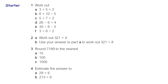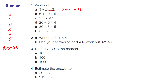Let's go through the starter together. Question one: three plus five times two. Remember BODMAS — we've got more than one operation, or you might know it as BIDMAS. Either one means the same thing. The operation we do first is multiplication, so we end up with three plus ten, which is equal to 13.